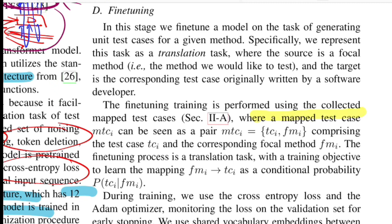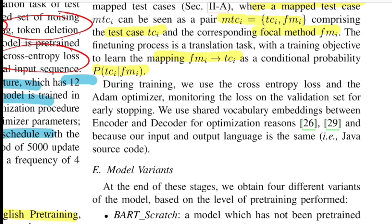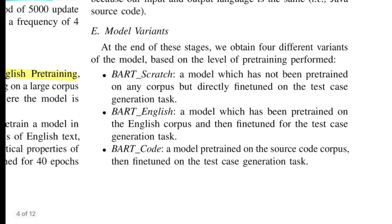For fine-tuning, every test case is mapped as the conditional probability of generating the test case given the focal method. This is treated as a translation task in a sequence-to-sequence architecture. Cross-entropy loss is computed at every time step t at the decoder, aggregated, and back-propagated. Since both input and output are Java code, shared vocabulary embeddings are used for both encoder and decoder, so the model doesn't need to relearn embeddings separately.